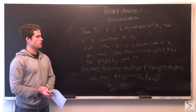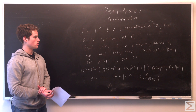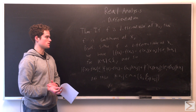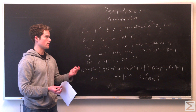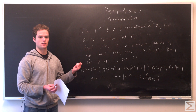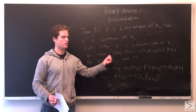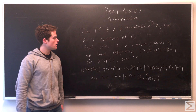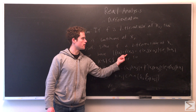If f is differentiable at x₀, we can show that f has to be continuous at that point x₀. Since f is differentiable, we have some f prime of x₀ such that the absolute value of f(x) minus f(x₀) over x minus x₀ is less than some ε₁ for |x minus x₀| less than δ₁. So if they're close enough, the fraction f(x) minus f(x₀) over x minus x₀ will get arbitrarily close to our limit. And by multiplying by x minus x₀, we have this inequality.